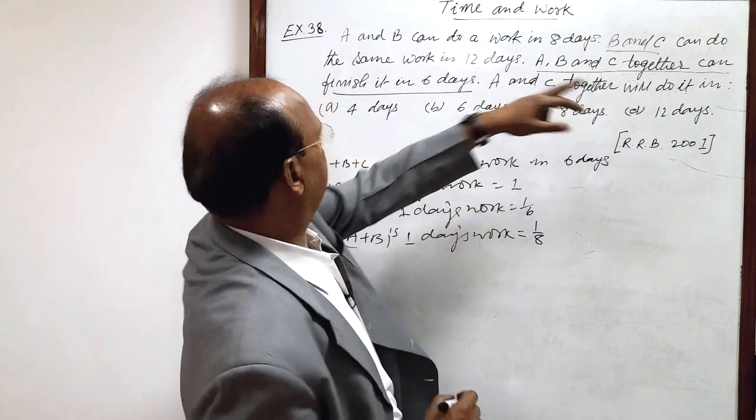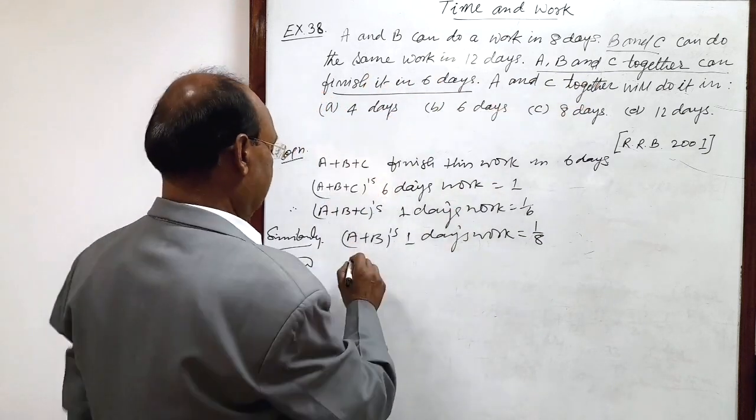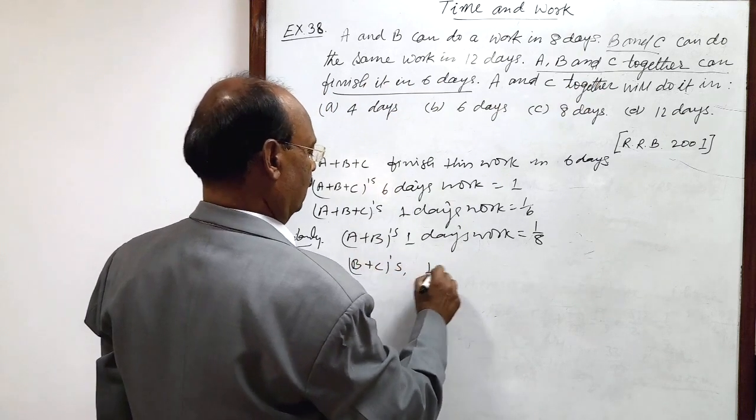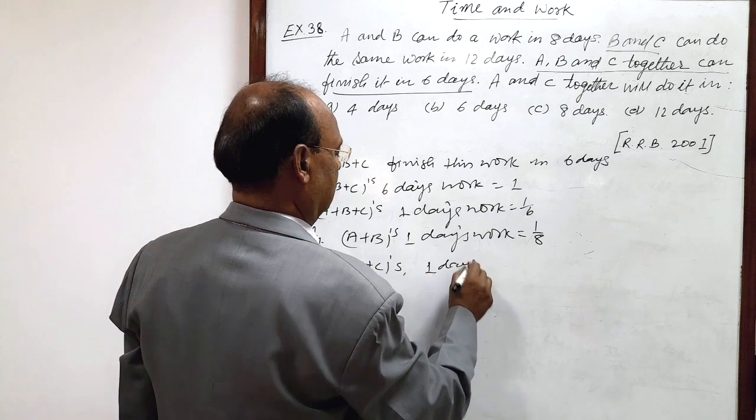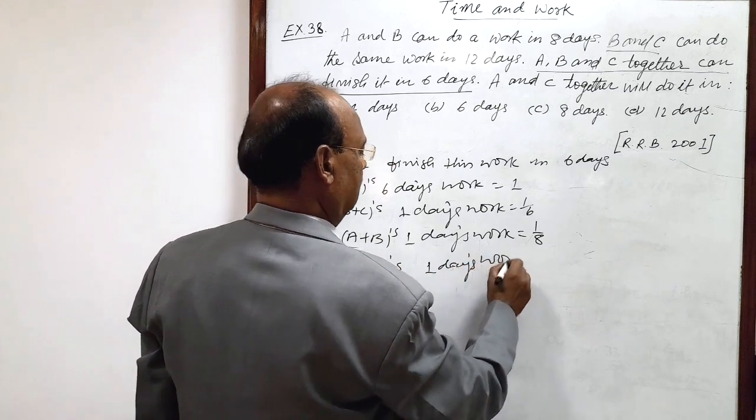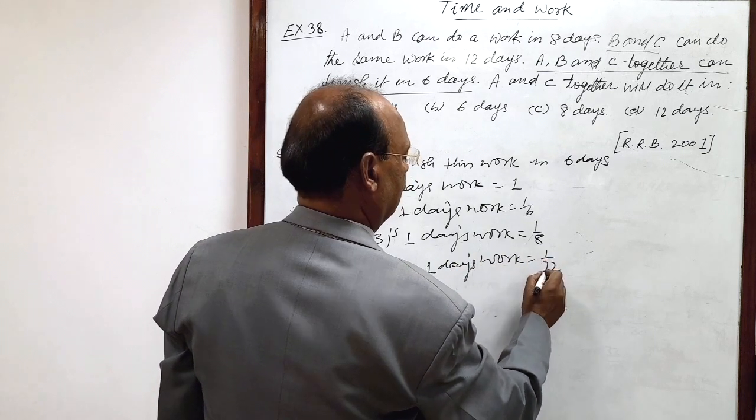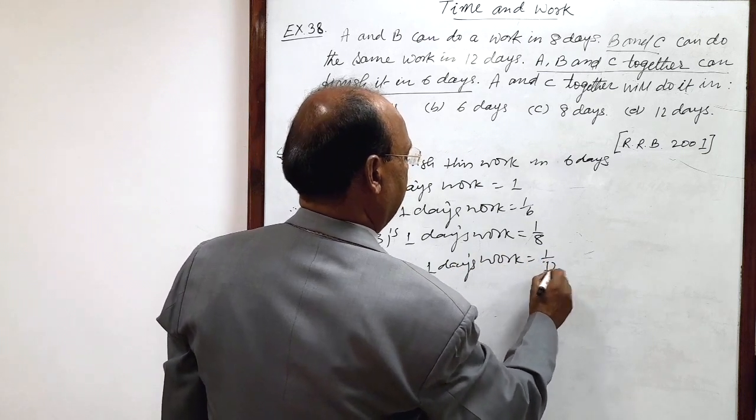And similarly, B and C can do the same work in 12 days. So B plus C, 1 day's work is equal to 1 by 12. This is 1 by 12.